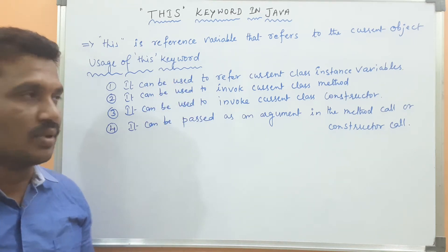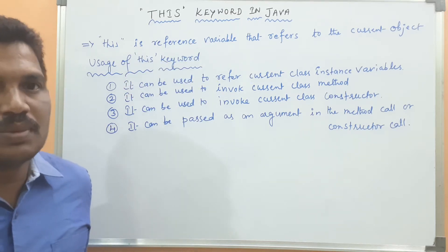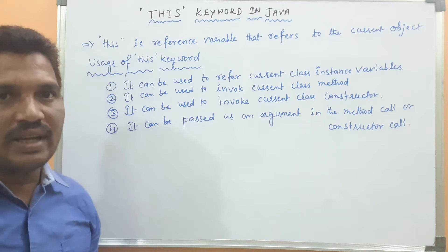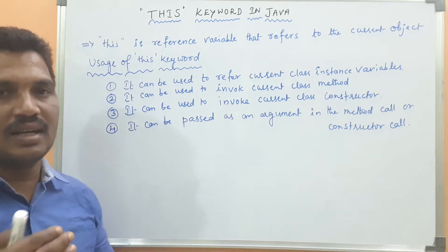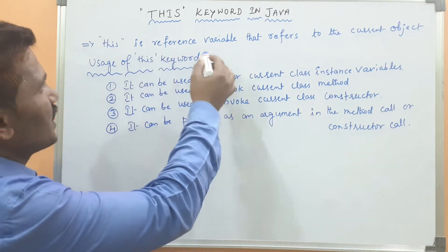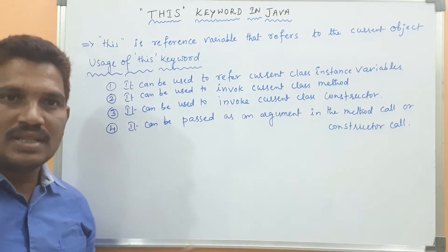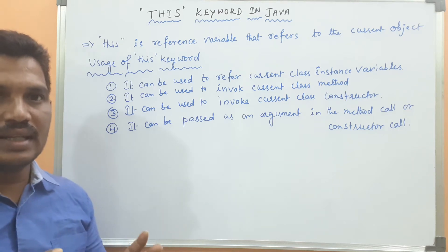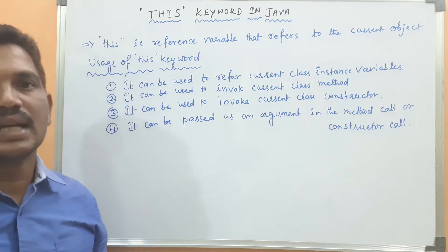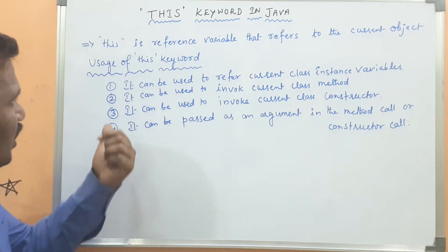The 'this' keyword is used to refer to the current object of a class. If you create 100 objects of the same class, how can you identify the current object? We can identify or refer to the current object using 'this' keyword. It is a reference variable — an alias name — that refers to the current object. If you created 10 objects of the same class, 'this' keyword refers to only the current object.